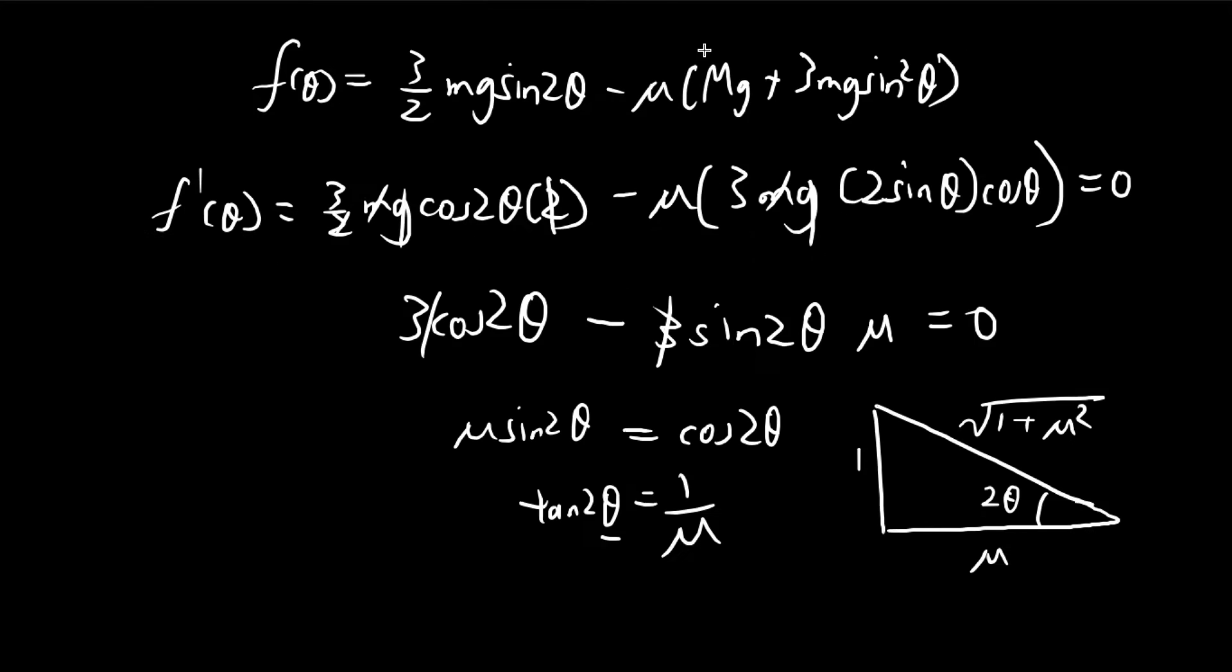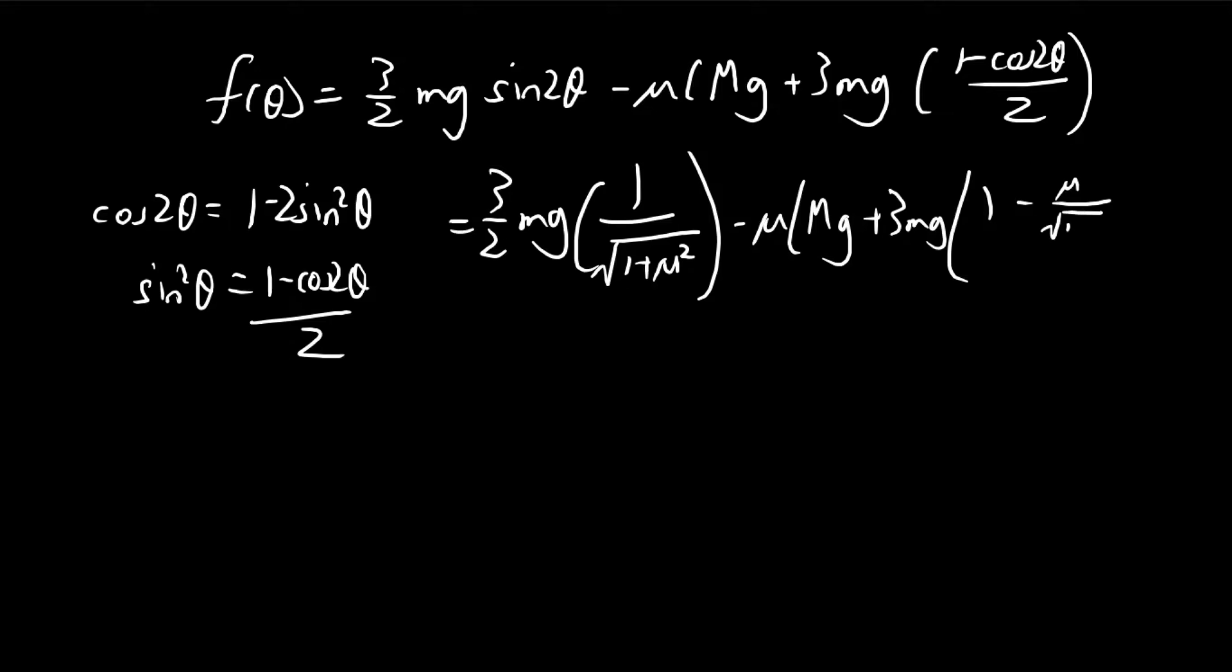And then cosine theta is mu divided by the square root of 1 plus mu squared. And then we know that this must always be smaller than or equal to zero. So under this condition, the ball will never move.